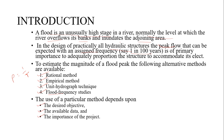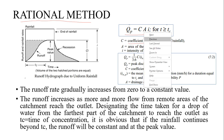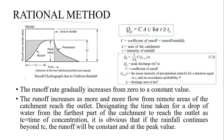First we start with the rational method. The formula is QP = C·A·I, where C is the coefficient of runoff, A is the catchment area, and I is the intensity of rainfall. The duration T used here should be greater than TC, the time of concentration.